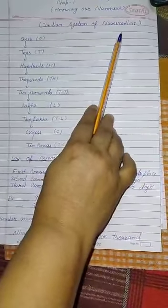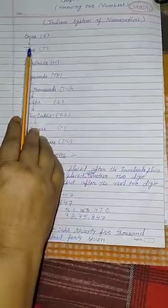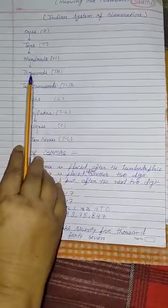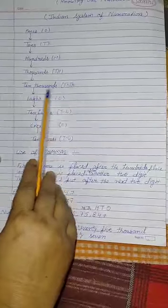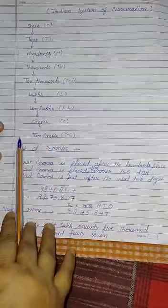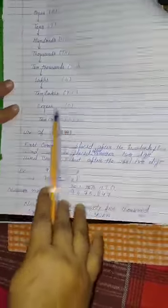Indian system of numerations mein sab se pahle ones, second tens, hundred, thousand, ten thousands, lakh, ten lakh, crores and ten crores.